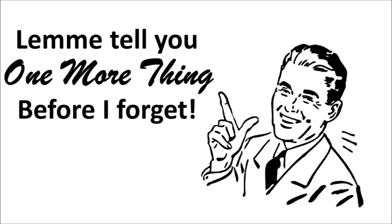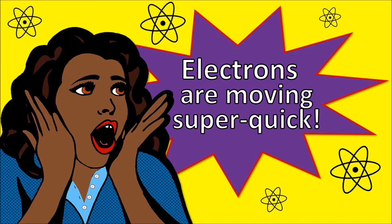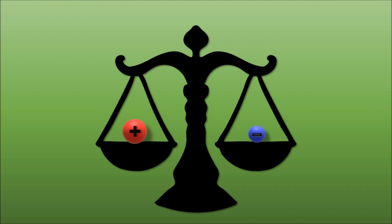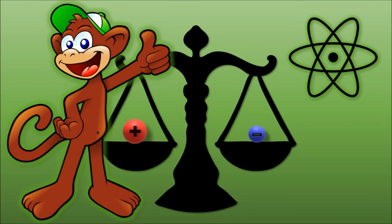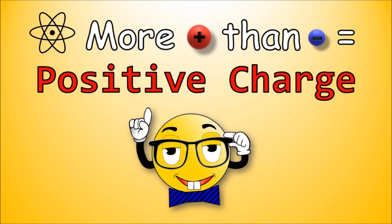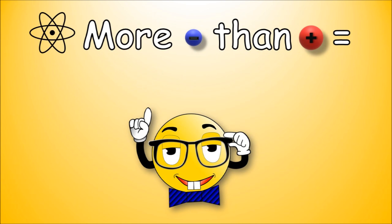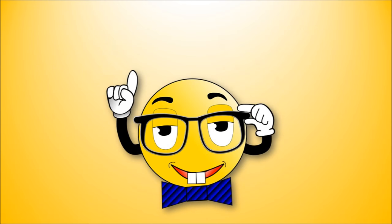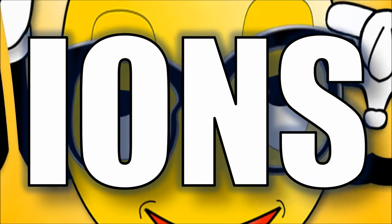And let me tell you one more thing before I forget. Electrons are moving super quick — they balance out the energy to make the atom legit. If an atom has more protons than electrons, it has a positive charge. If it has more electrons than protons, it has a negative charge. And these are called Ions!